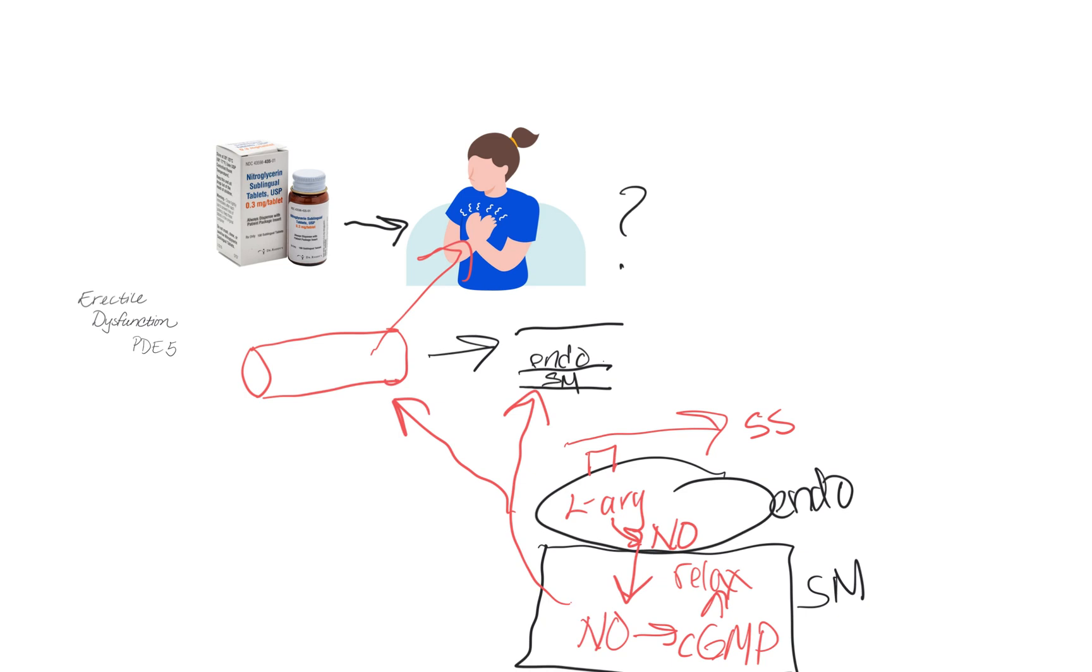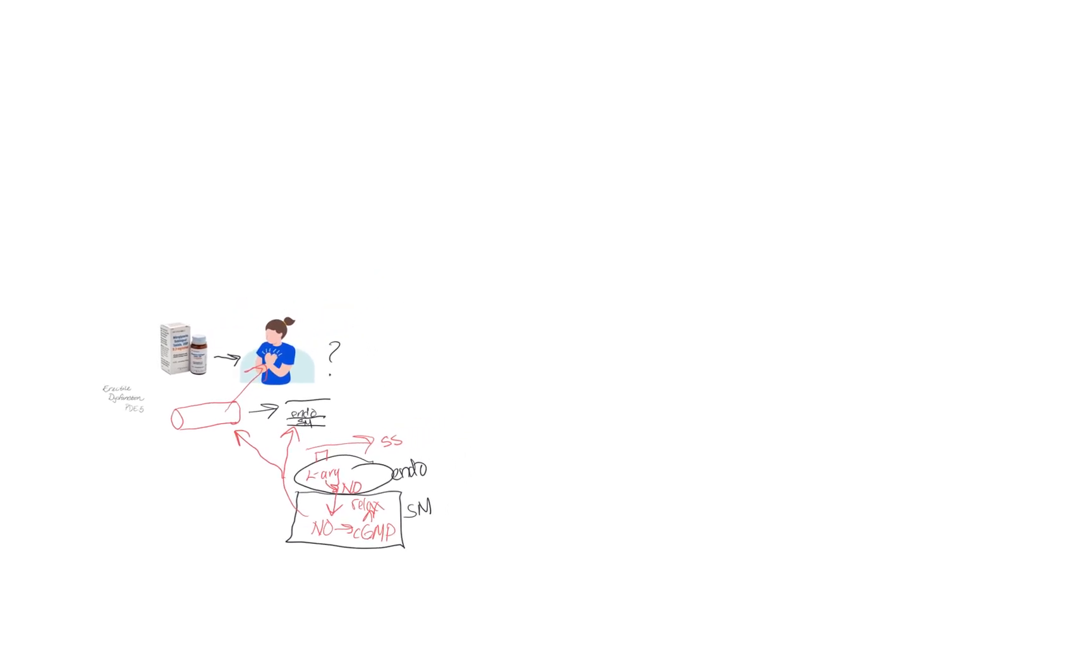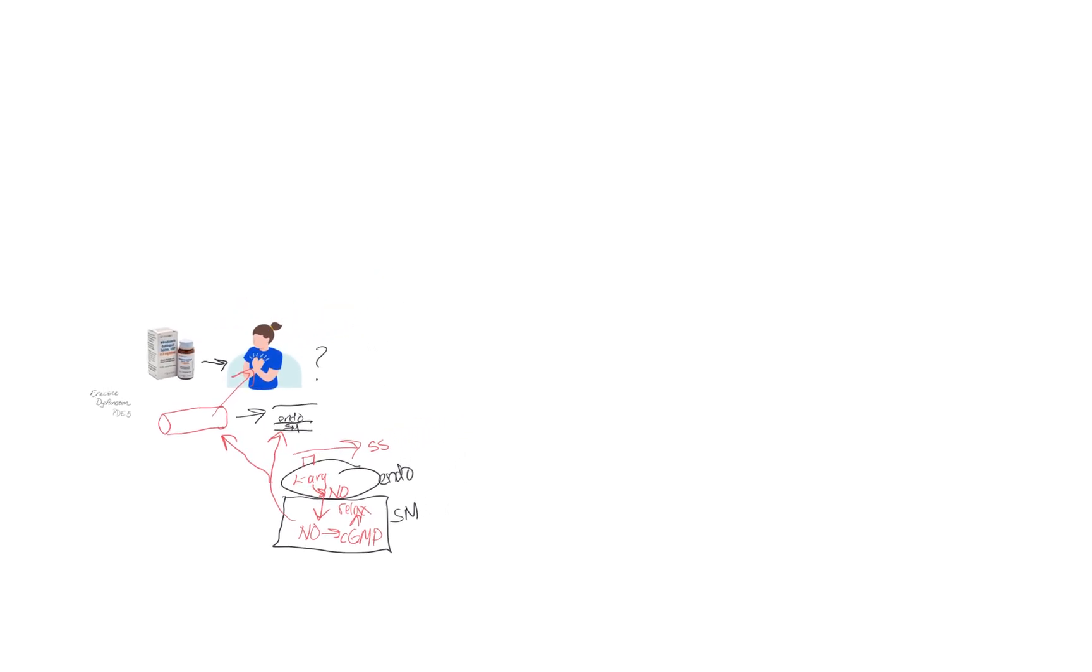All right, so this is our natural pathway, and what does this have to do with erectile dysfunction? Well, if we think about this pathway, and how nitric oxide in general is associated with vasodilation, and then we think about erection, in order for somebody to have an erection, we need to have the ability for blood vessels to dilate to maintain the erection.